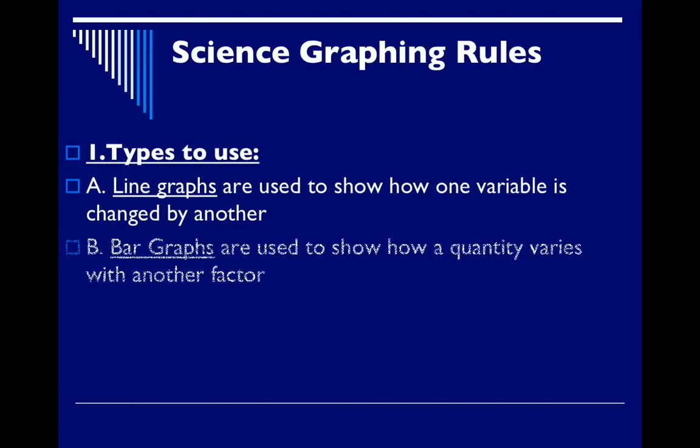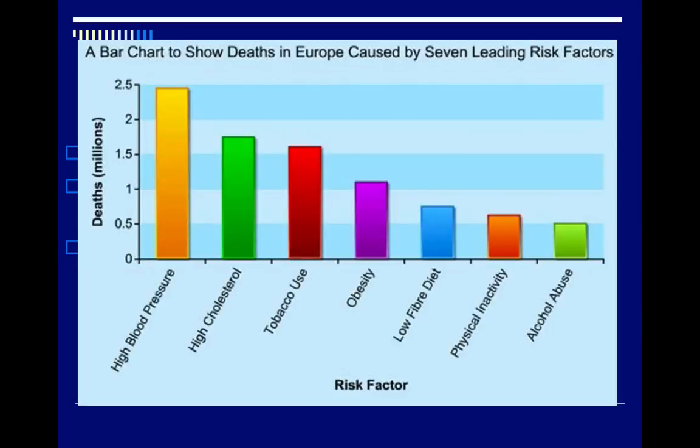Now second type of graph you could use would be a bar graph to show how quantities vary by or with another factor. So let's take a look at this graph here.